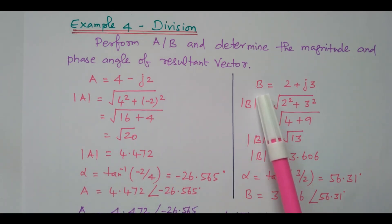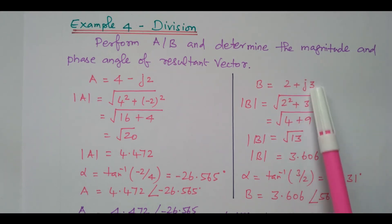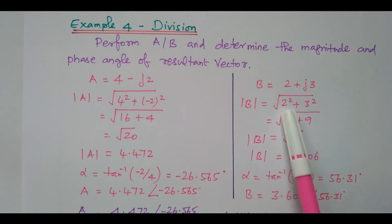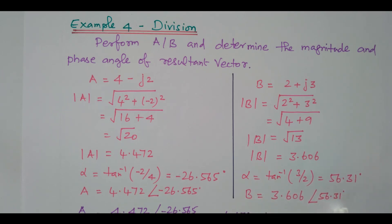So it is represented in the polar form as 4.472 with an angle of minus 26.565. This is the rectangular form, now converted into polar form. Another vector B equal to 2 plus J3 — real term is 2, imaginary term is 3. The magnitude is square root of 2 squared plus 3 squared, giving 3.606. The angle tan inverse B by A — imaginary term divided by real term — 3 by 2 — is 56.31.